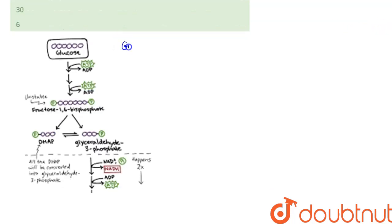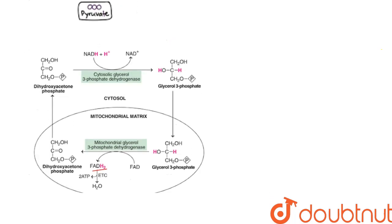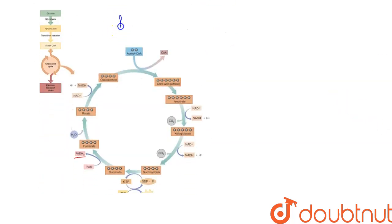First stage is known as glycolysis. Second stage will be known as malate-aspartate shuttle. Third stage will be known as Krebs cycle.